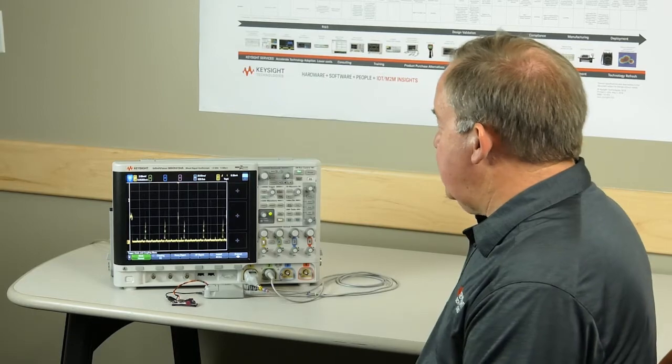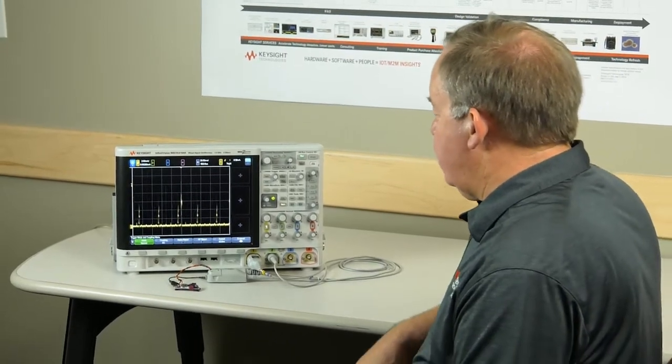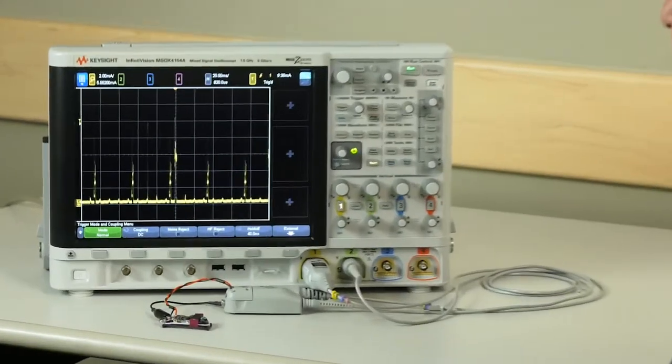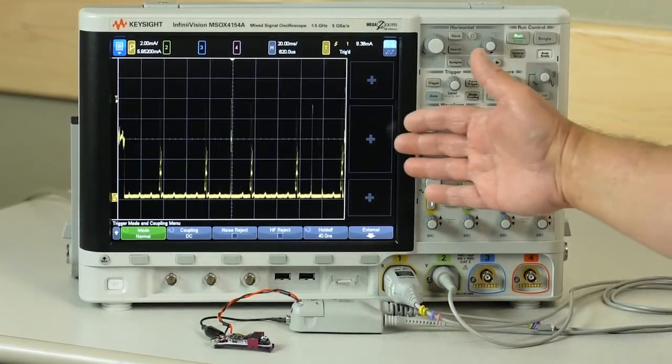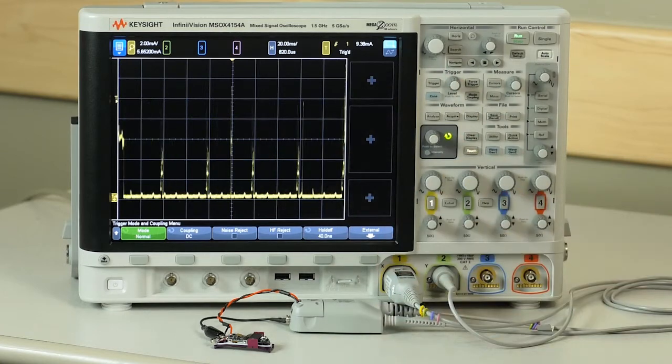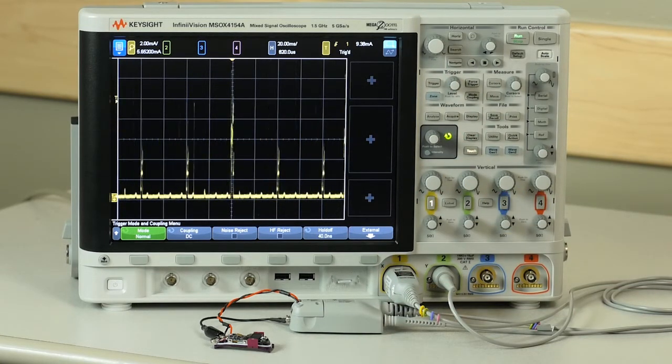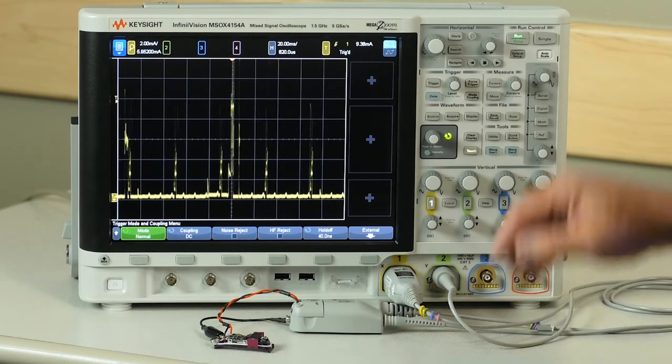So looking at the oscilloscope now, we have a wearable fitness band which is in a fairly idle mode. And on the oscilloscope, we see a lot of measurements going by very rapidly. They're very low duty cycle, very high amplitude pulses. Let's capture a few of these pulses and take a look.